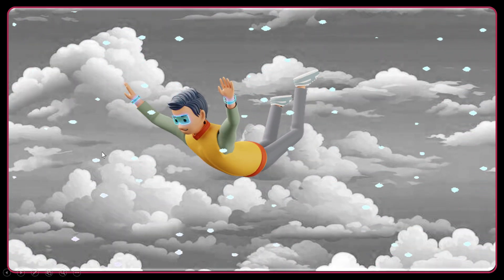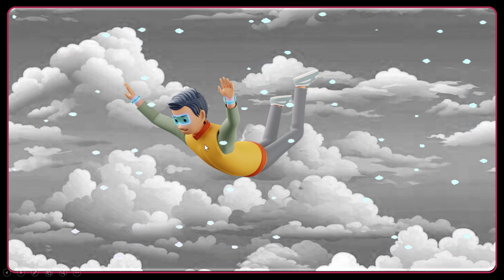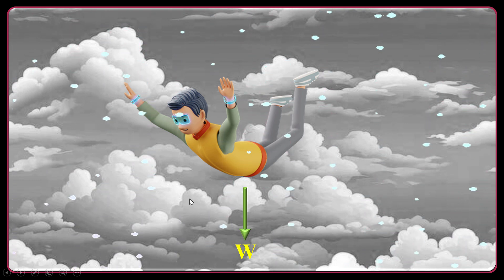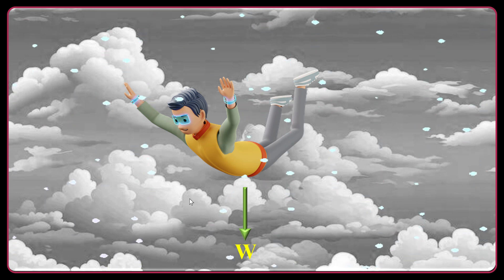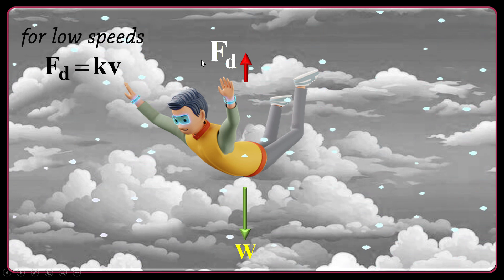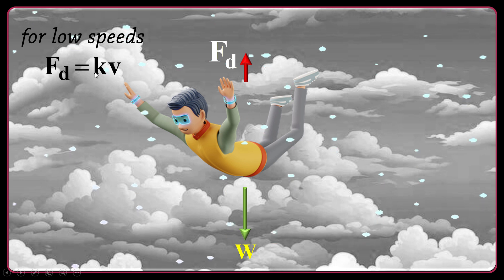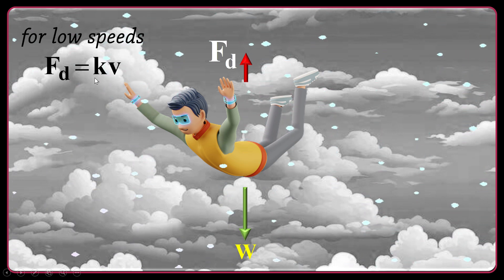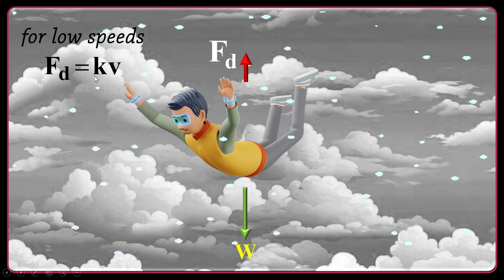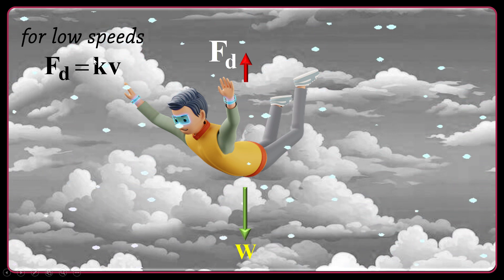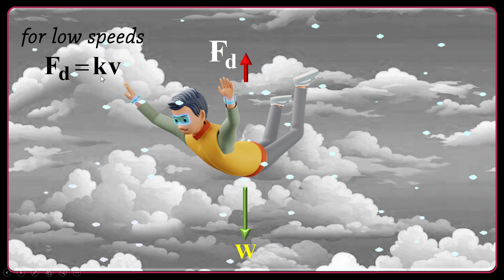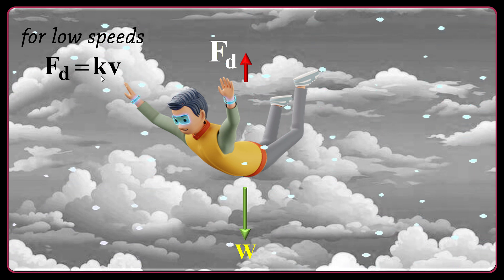Let's continue with the free fall. The object or a person is released from rest. At the beginning, the only force acting on the object is the downward force W. But as the object gets faster, we expect a drag force against the motion. This drag force at low speed is proportional to the velocity — a formula like k times v, where k is a constant highly affected by the density of the air and the shape of the object.